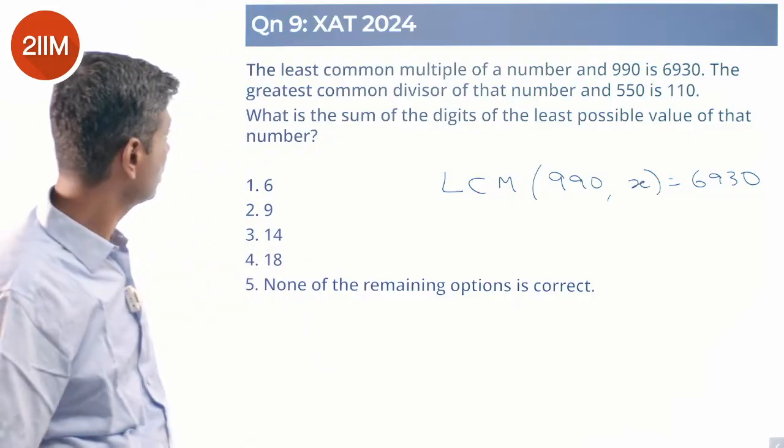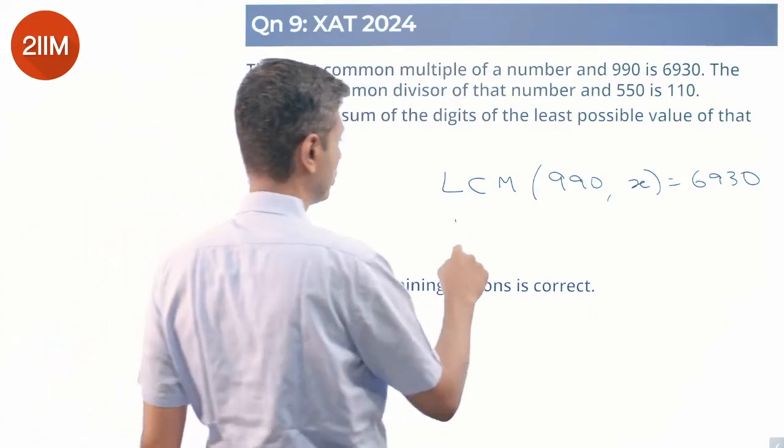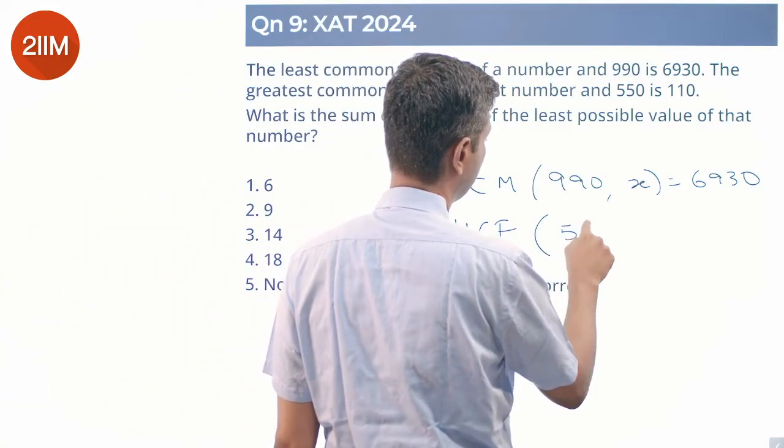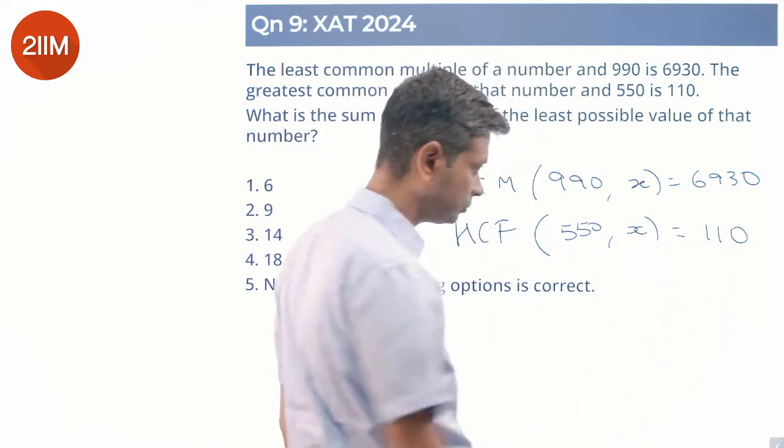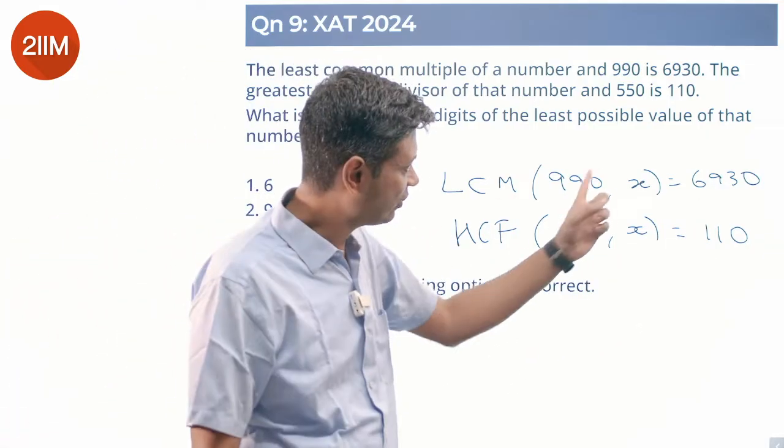That's what we infer. The greatest common divisor of that number and 550 is 110. So HCF(550, X) = 110. Therefore, X is a multiple of 110 and X has a 7 in it.